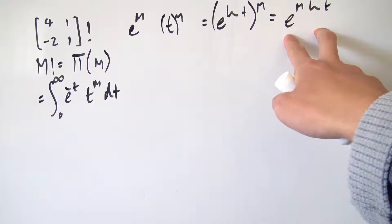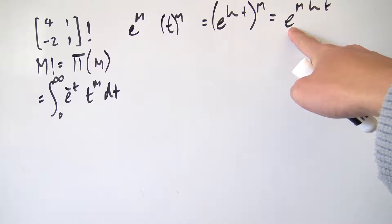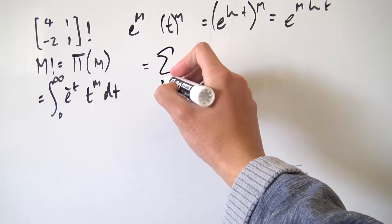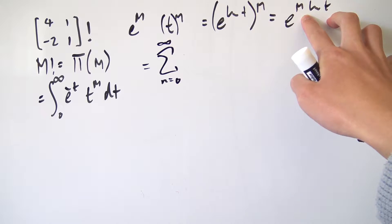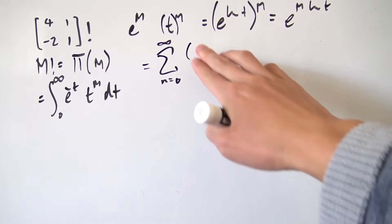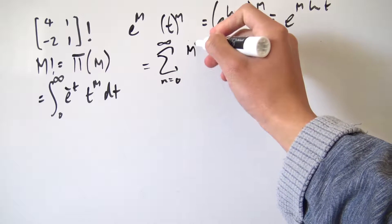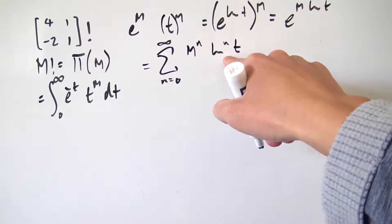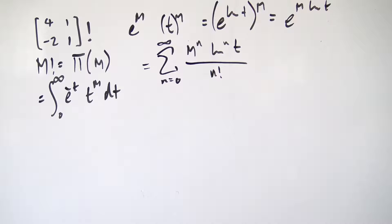We can use the power series expansion for the exponential function, rewriting this as the infinite sum from n equals zero to infinity of our argument — M times natural log of t — raised to the nth power. Expanding that out, we get M to the n times natural log of t raised to the nth power, all divided by n factorial.